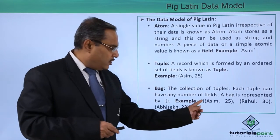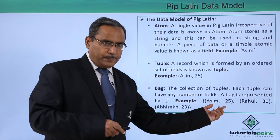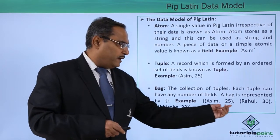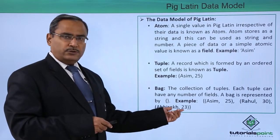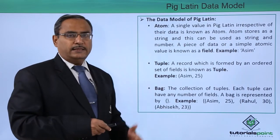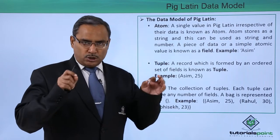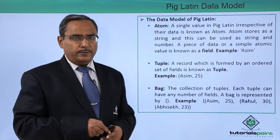As an example, we can consider that within curly braces we are having one tuple that is Asim comma 25, another tuple Rahul comma 30, another tuple Pradeep comma 23. Bag is nothing but collection of tuples and should be enclosed within curly braces.